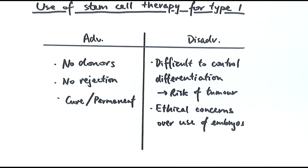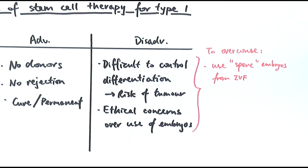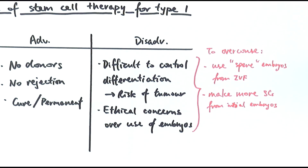There are a few suggested ways to overcome these disadvantages. One suggestion is to use spare embryos from IVF — in vitro fertilization — where sperm and egg cells from the couple are used to produce multiple embryos in a petri dish, a couple of which are inserted back into the mother to increase the chances of a successful pregnancy, leaving some spare embryos. Some people suggest using those spare embryos rather than embryos from abortion. Another method is to extract more stem cells from the initial group of embryos rather than producing multiple further embryos, thereby reducing the number of embryos used overall and lessening the ethical concern.